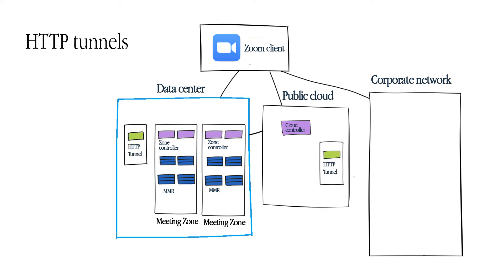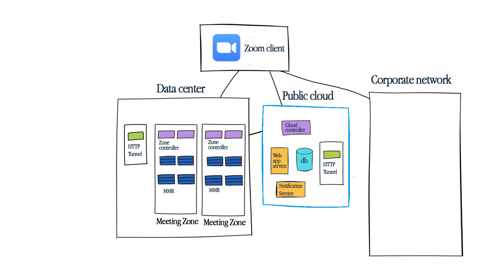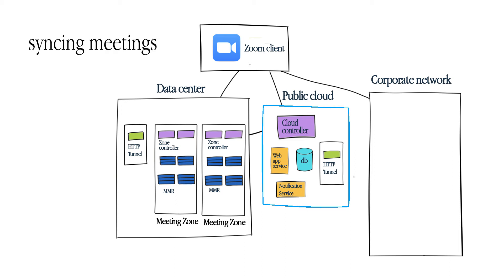HTTP tunnels work as connection points for some clients, such as the traditional phone. The public cloud hosts web applications and web services. Additionally, the cloud controllers sit here and are used for syncing meetings between the public cloud and data centers.